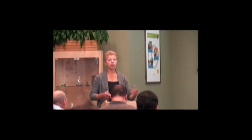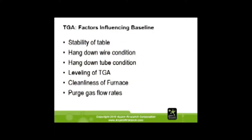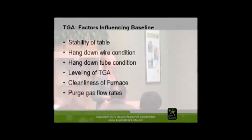Factors that affect the baseline: stability of the table is a big one. If people are slamming doors and banging nearby, you really need something that is not going to be moving around so that the balance is not jarred. Hang-down wire condition — if there is soot or dirt near that wire, it can influence your numbers. The wire and the pan can get dirty, so sometimes you have to go to a thousand degrees, let it sit, and burn it all off. Leveling of the TGA is important, as is cleanliness of the furnace and purge gas rates. If you purge too fast, you also have the pan vibrating in the air.